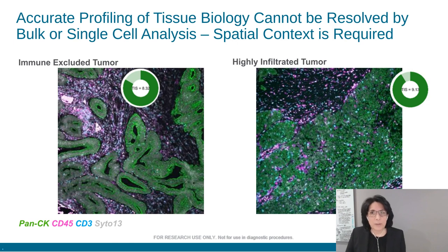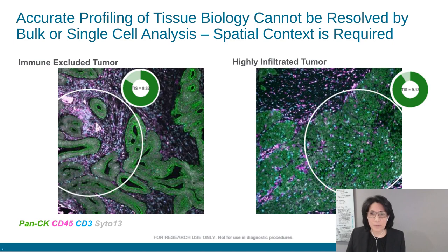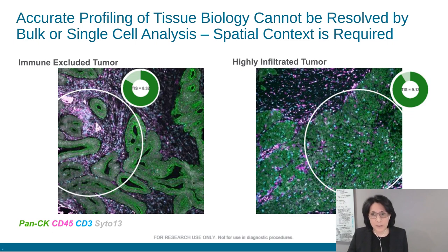Based on results from the Merck study, we know identification of inflamed tumors is necessary but not sufficient for predicting response to immunotherapy. We now understand that there are different tumor immune phenotypes. The image on the left depicts an immune-excluded tumor, while the image on the right depicts a highly inflamed tumor. Both tumors yield high TIS scores from bulk gene expression profiling, yet the localization of immune cells depicts different tumor biology. This suggests that bulk or single-cell analysis cannot accurately profile tissue biology, and that spatial context is important.